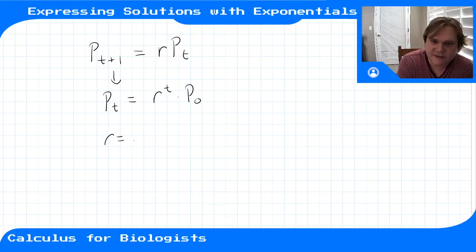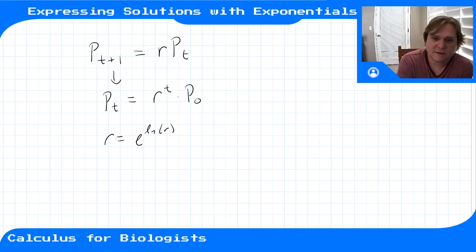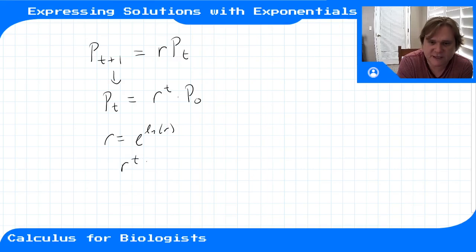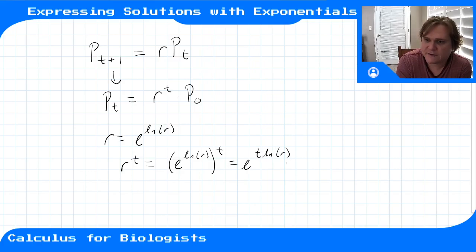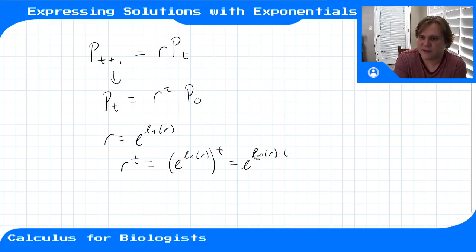We can write r as e to the ln of r, because e and ln are inverses of each other. So if we replace r^t with this, that means r to the t is e to the ln(r) times t. By the law of exponents, this becomes e to the t times ln(r), or written as e to the ln(r) times t.